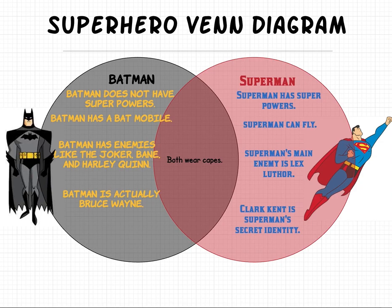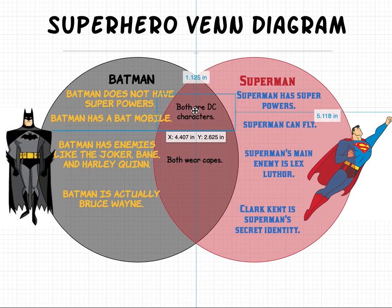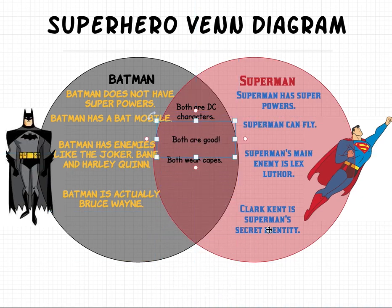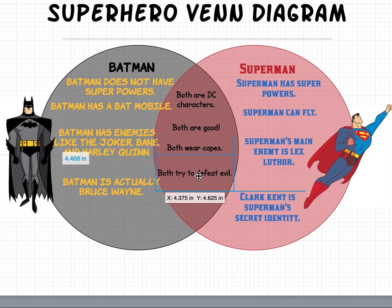If you take a look at our Venn diagram right now, you can see that this section is only Batman and this section is only Superman. Now we need to find things that are both Batman and Superman to put in the middle. For all my superhero fans and comic book fans out there, you'll know that both are DC characters. Both are good characters too — they're superheroes, not supervillains. And both try to defeat evil.